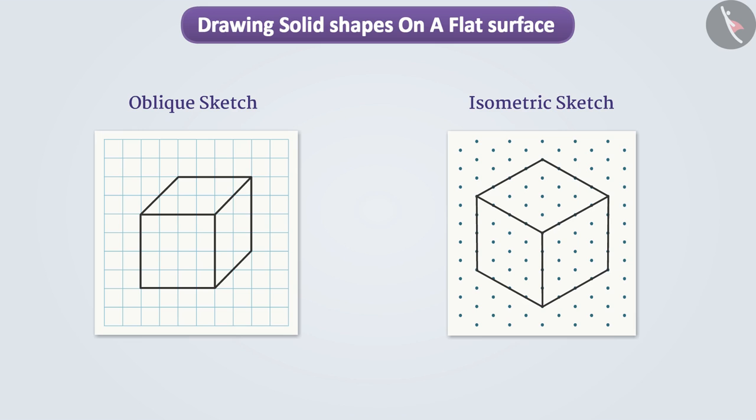Let us first understand what is the difference between them. Here the cube with 4cm edge is drawn with both these techniques in oblique sketch and isometric sketch. But there is some difference between the two. Can you tell what is that difference?